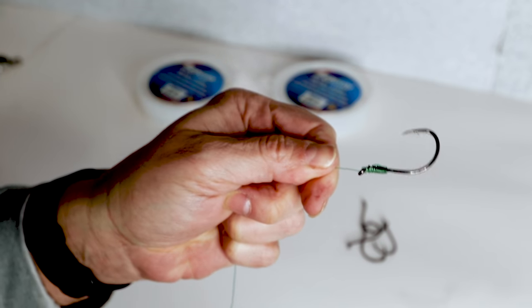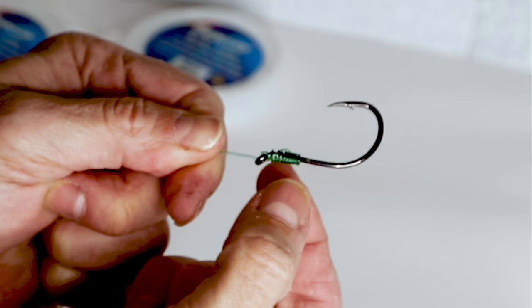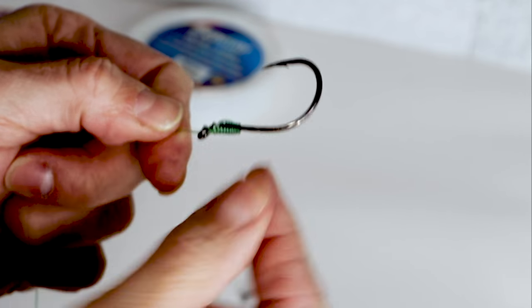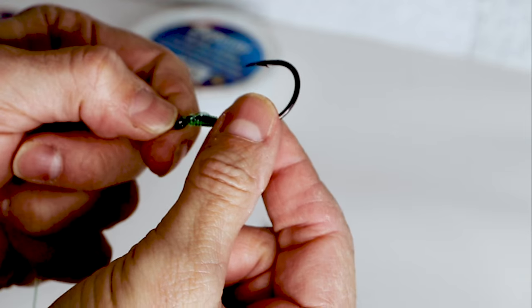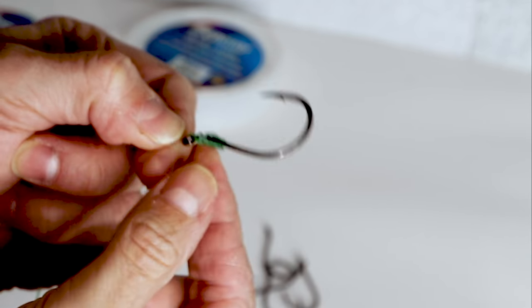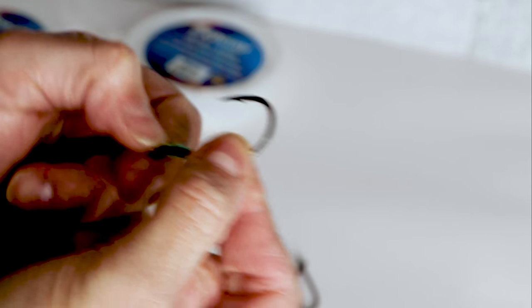And again, your pulling point is coming from the shaft of the hook, not this offset eye. If you were tying directly to the eye and you pulled, the hook's going to turn away from the fish. Here, you're going to get a steady, even pull.